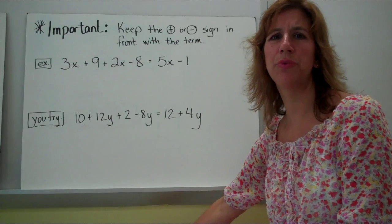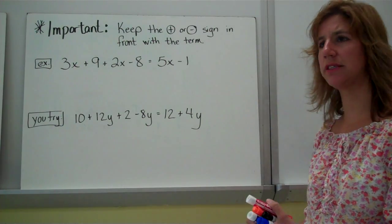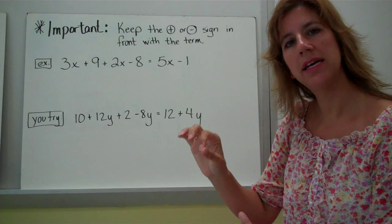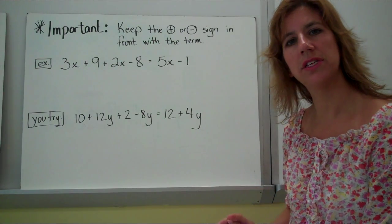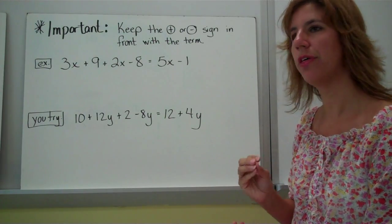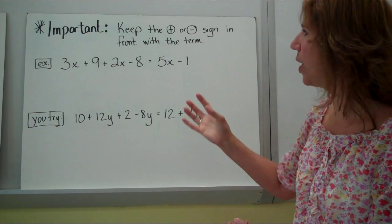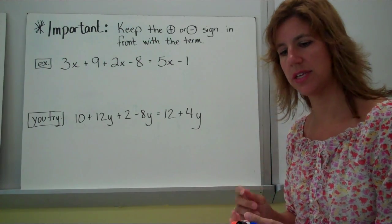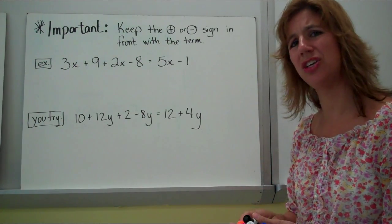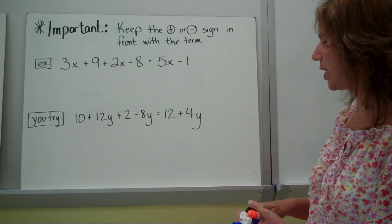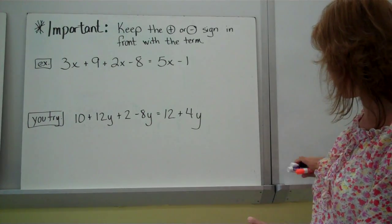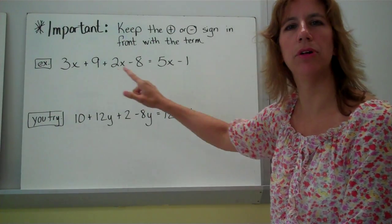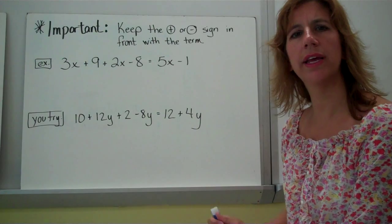This is really, really important — write it down and put a big star next to it. You must keep the positive or negative sign that's in front of the term with it. When you're moving things around, it's really important to keep track of those signs — that can make a huge difference. We're going to do this one together, so go ahead and jot down this example and let's work it out together.